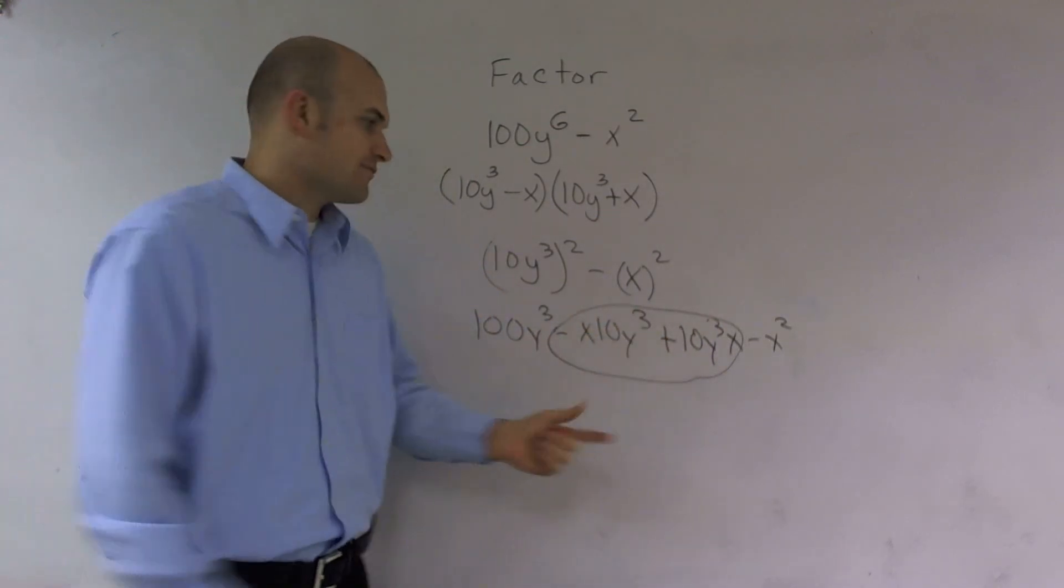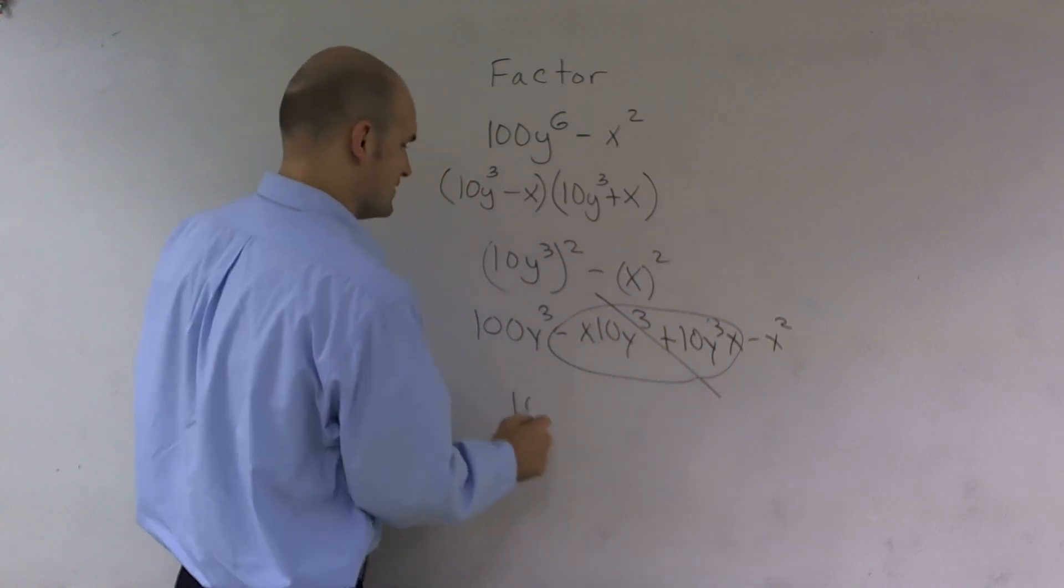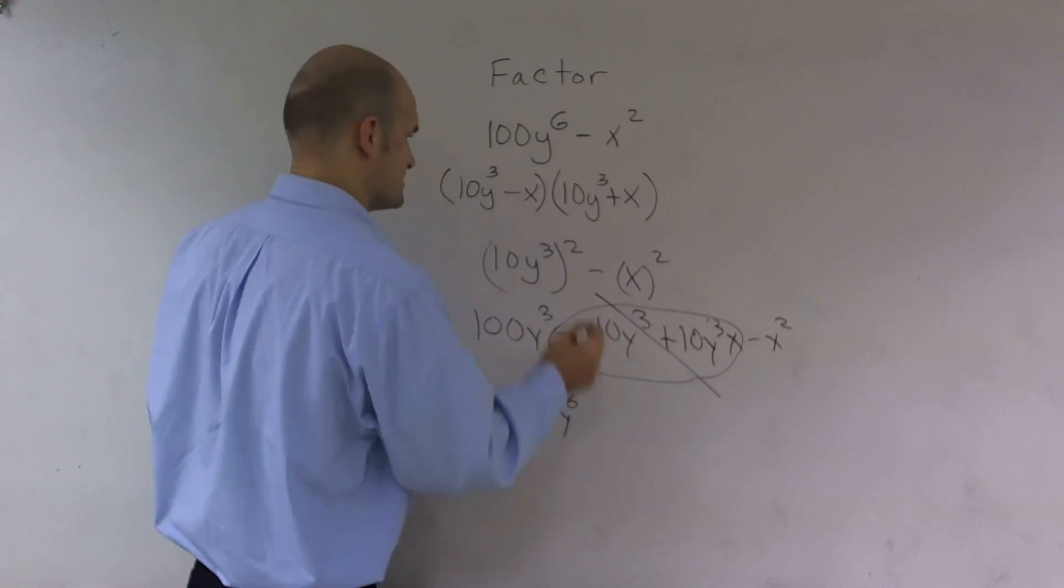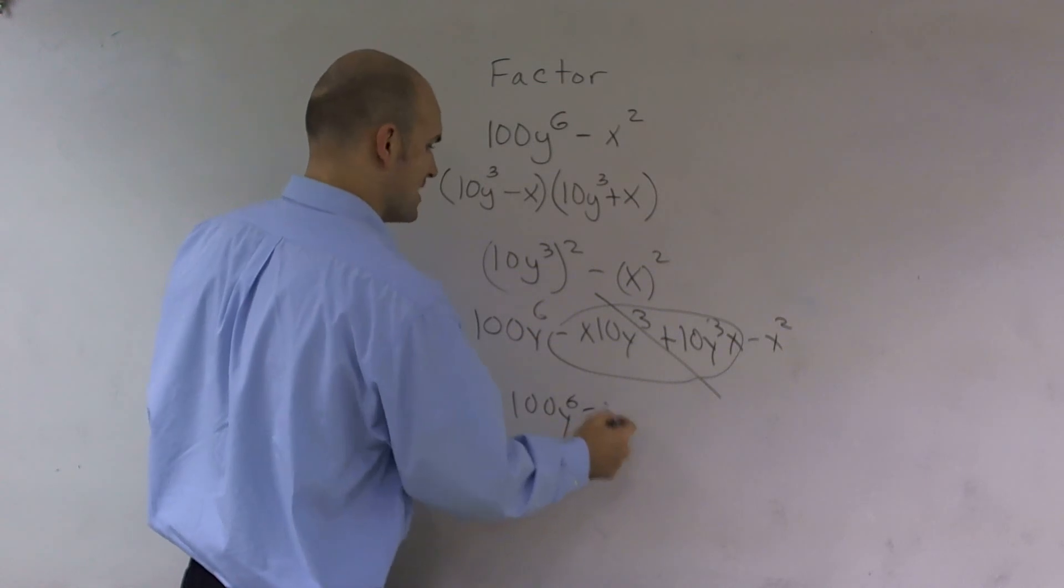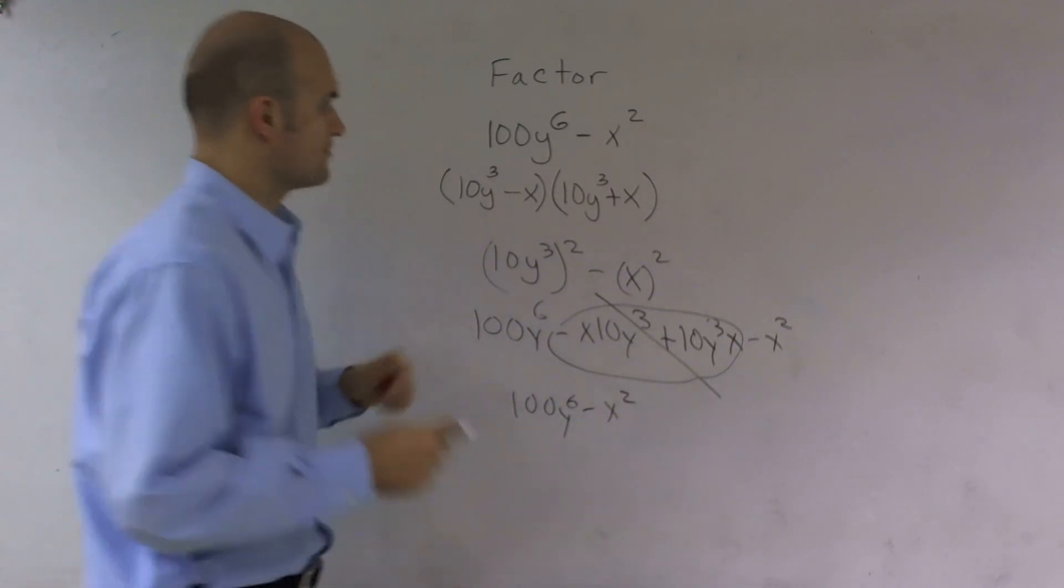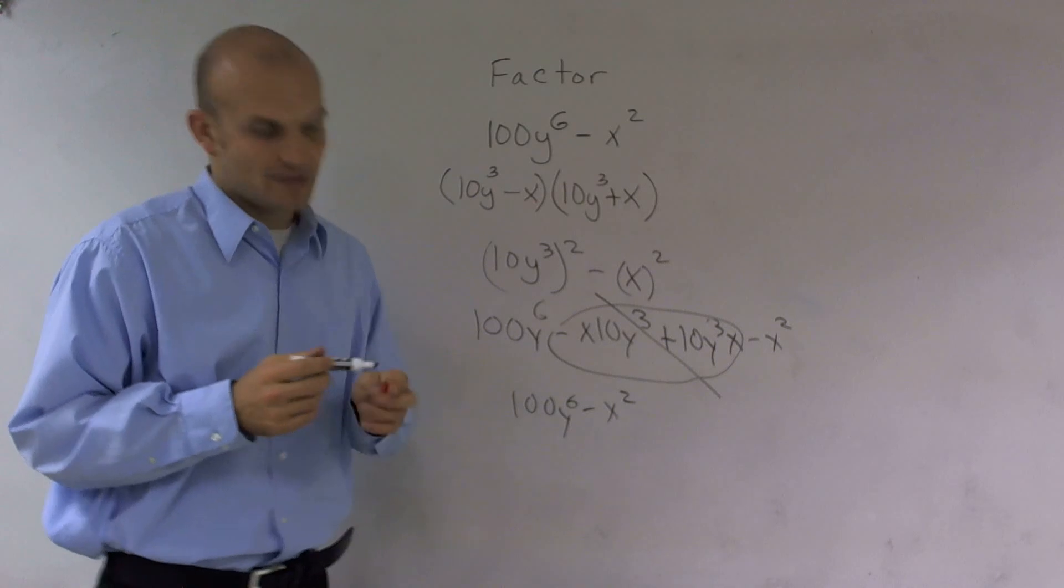So therefore, they're going to cancel out, leaving us just with 100y to the sixth minus x². So that's how you factor that problem.